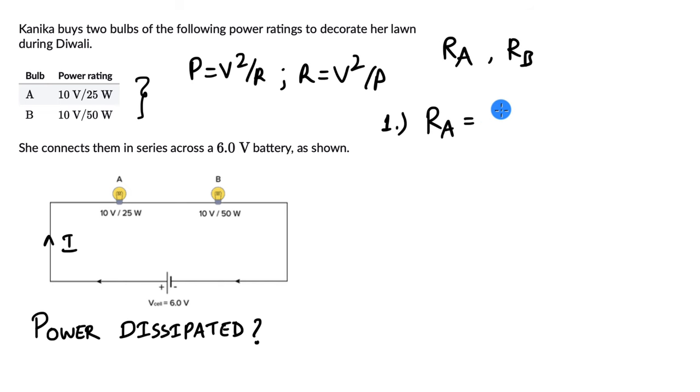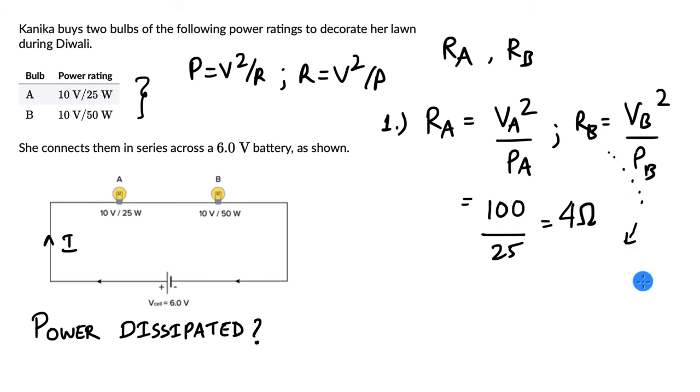R_A is really R_A. This is V_A² divided by P_A. And R_B, this is V_B² divided by P_B. So R_A, this is V_A². This is 100. I'm just writing 100, 10 square, divided by 25. This comes out to be equal to 4 ohms. And R_B, R_B, let's write that over here. R_B is V_B² again, 100, divided by P_B. So that is 50. This is 2 ohms.